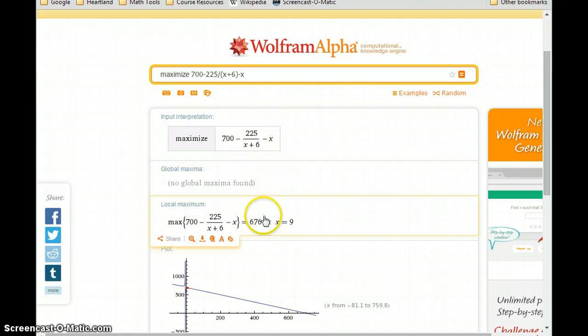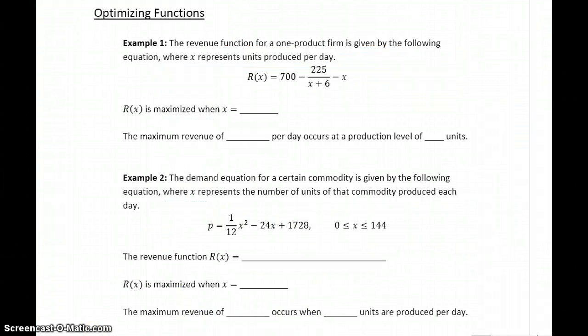And our output, in this case, will be a local maximum, occurring at x equals 9, and the maximum itself, the function value, would be 676. So, what this means is that our revenue is maximized when x is equal to 9, and we'll achieve a maximum revenue of $676. That's our revenue function being evaluated at x equals 9. So, we'll achieve a maximum revenue of $676 when there's a production level of 9 units per day.